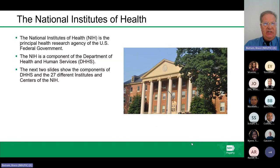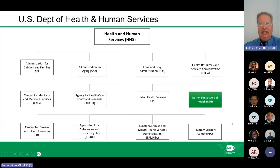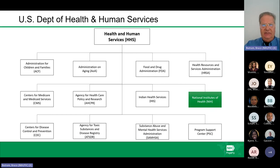The NIH is the principal health research agency for the U.S. federal government. The NIH is a component of the Department of Health and Human Services. Here you can see the different components of DHHS, and you can see NIH is one of the operating divisions of DHHS.